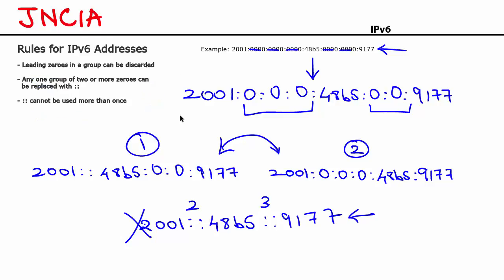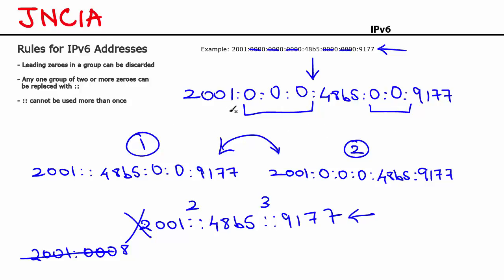Let's quickly recap the rules. Rule 1: all leading zeros in a group can be discarded. In our example we had five groups of zeros — we discarded all leading zeros and were left with only one zero per group. Note: if a group looks like 0008, you discard the three leading zeros and are left with only the 8. Rule 2: any one group of two or more zeros can be replaced with double colon — you can replace the first or the second group. Rule 3: double colon can be used only once.